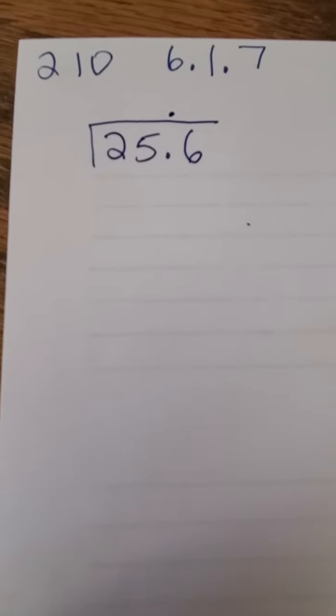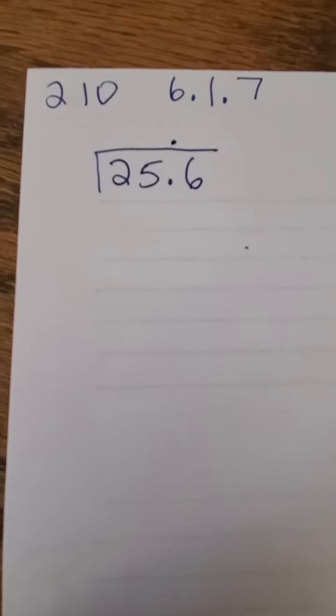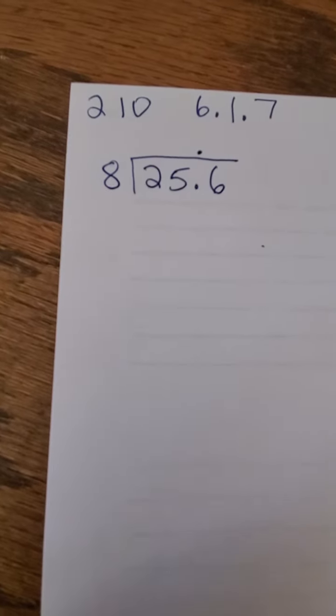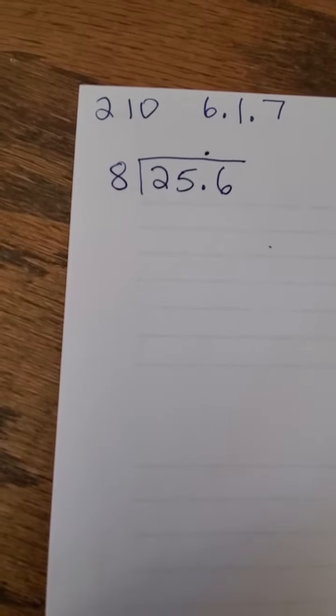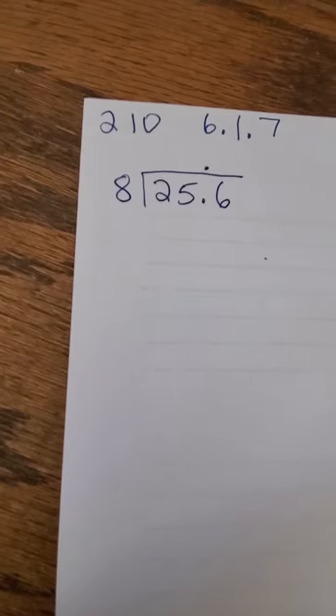A very simple way to look at division is just to do the division. Let's say I have 25.6 divided by 8. Well, I'm just going to do a regular division.